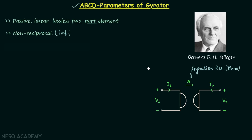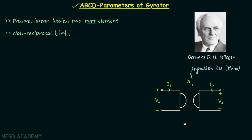The gyrator is made of op-amp and RC elements and can be used as an impedance inverter. If we connect a capacitor at the output of a gyrator, the input impedance will be inductive. Conversely, if we connect an inductor as the load, the input impedance will be capacitive. In VLSI design, real inductors have large size, so we use the gyrator to imitate an inductor by connecting a capacitive load.